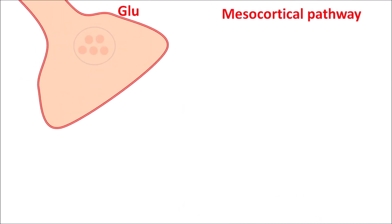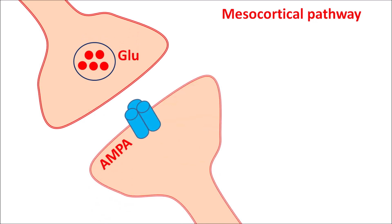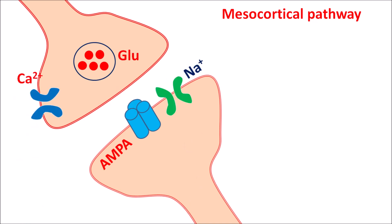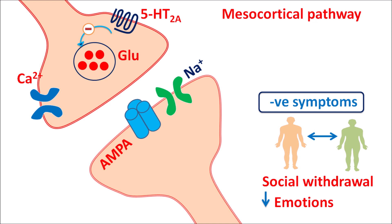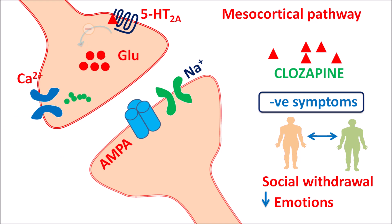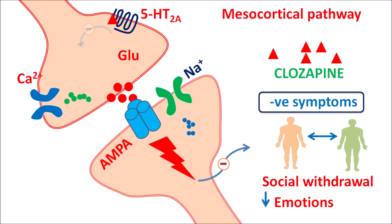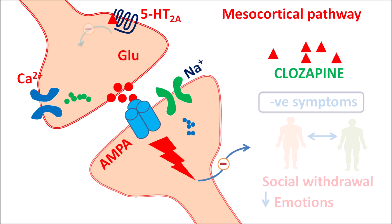In the mesocortical pathway, glutamate plays an important role. On postsynaptic neurons, glutamate receptors such as AMPA are expressed, coupled with sodium channels. On presynaptic neurons, calcium channels and 5HT2A receptors are present — again inhibitory in nature. Negative symptoms such as social withdrawal and flattening of emotions are mainly observed in psychosis. Clozapine blocks the 5HT2A receptors, eliminating the inhibition, resulting in increased release of glutamate via calcium-mediated exocytosis. When glutamate acts on AMPA receptors, it increases sodium entry, causing activation and thereby relieving negative symptoms of psychosis. In this way, clozapine reduces both positive and negative symptoms.